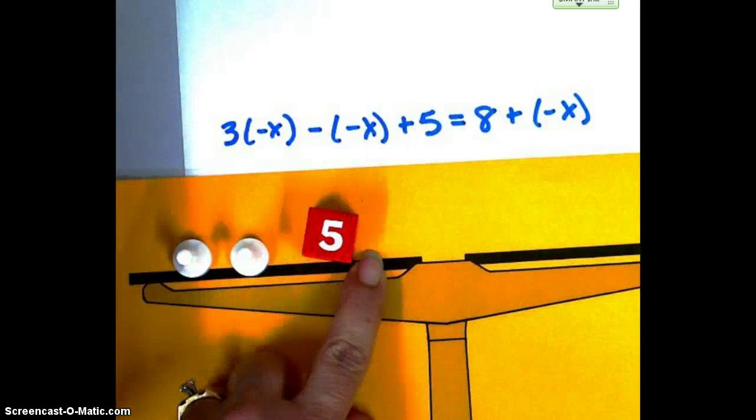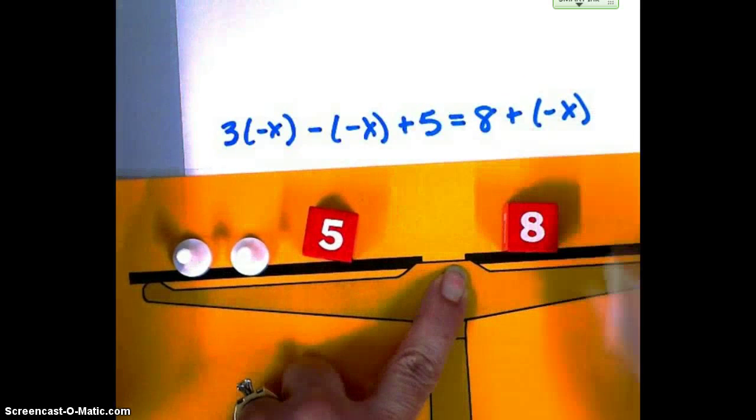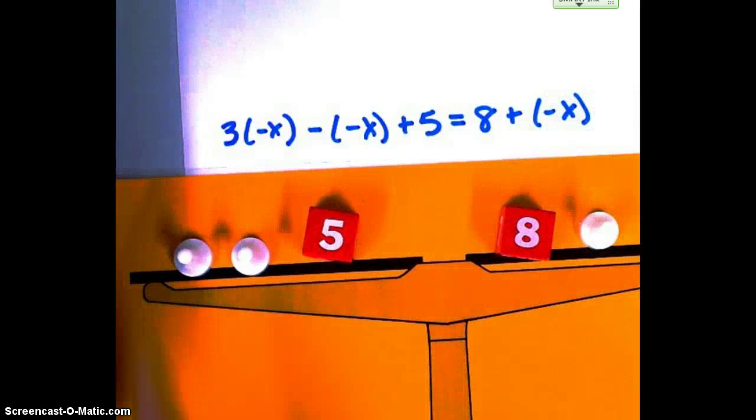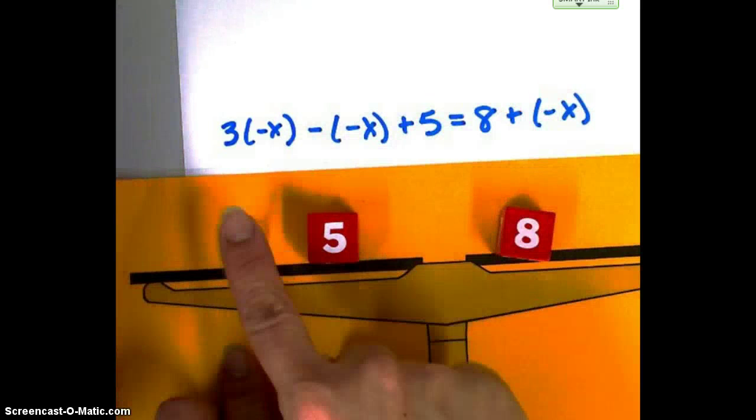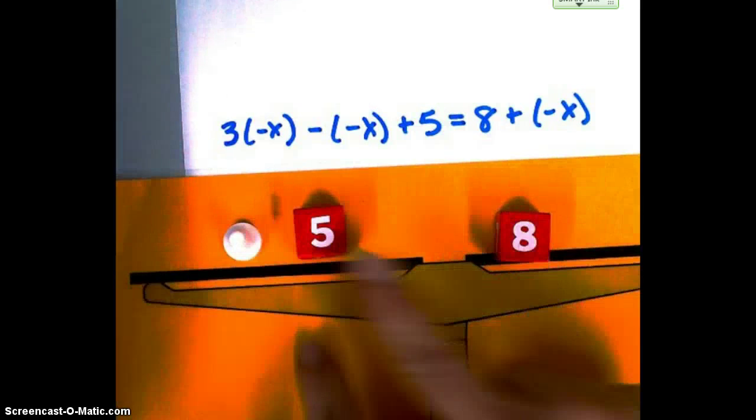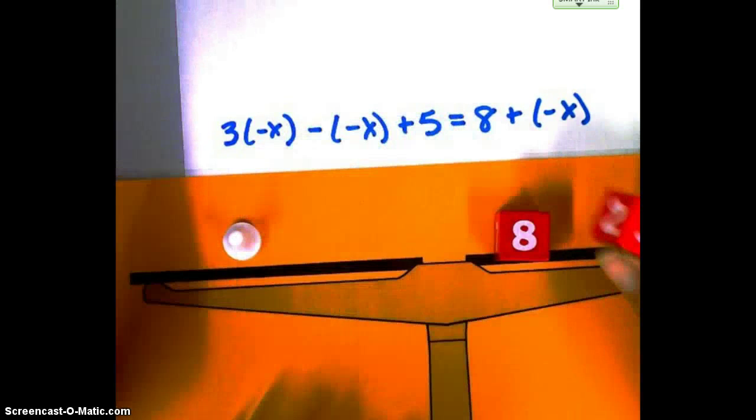And on the other side, I have 8 plus a negative x. Okay. Legal moves. I can take one off of each side. And now I've got a 5 and an 8 here that I can change. So if I subtract 5 from this side, that will leave me 3 over here.